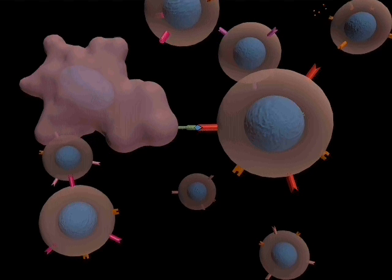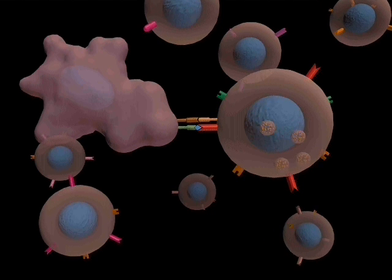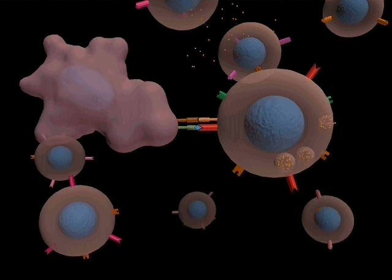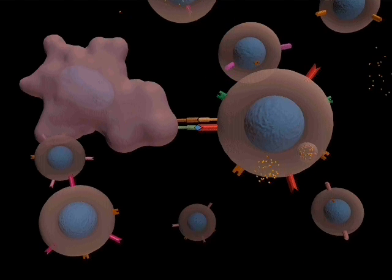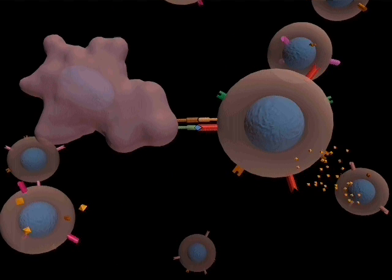There are also crucial interactions between pairs of co-stimulatory molecules on the surface of each of the two cells. In addition to being able to bind interleukin-2 using its new receptor, the T-cell is now also able to produce its own interleukin-2, enabling it to stimulate itself.